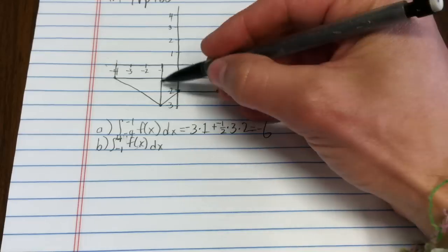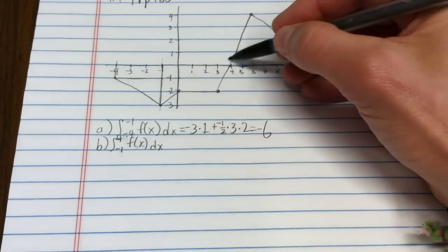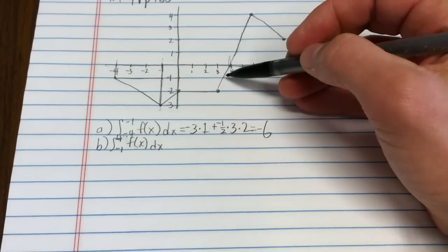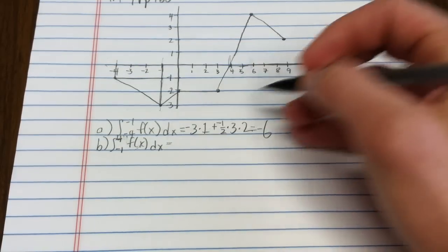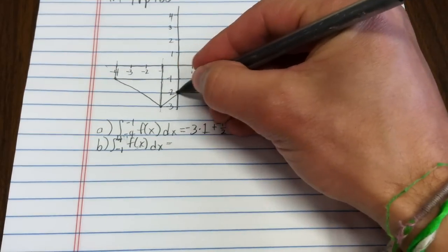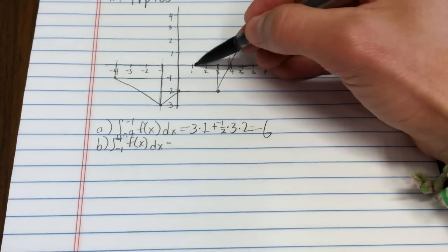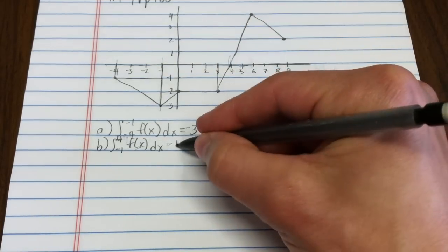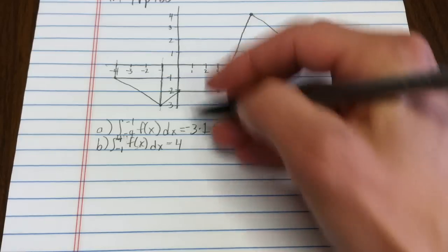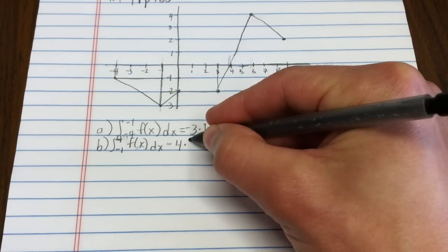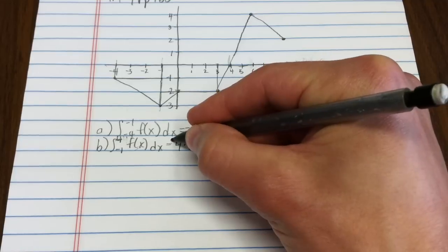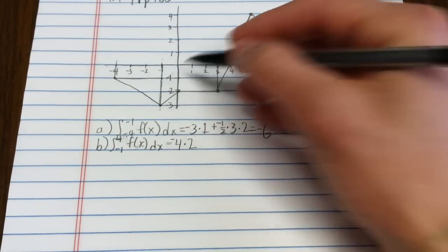So we've taken care of this interval. Now I'm going from here to here. This, again, is going to be negative. Let's see what we have. I think I have a pretty nice rectangle there. That rectangle is 1, 2, 3, 4 wide and 2 tall, but of course it goes in the negative direction. So that's going to give me a negative area right here.